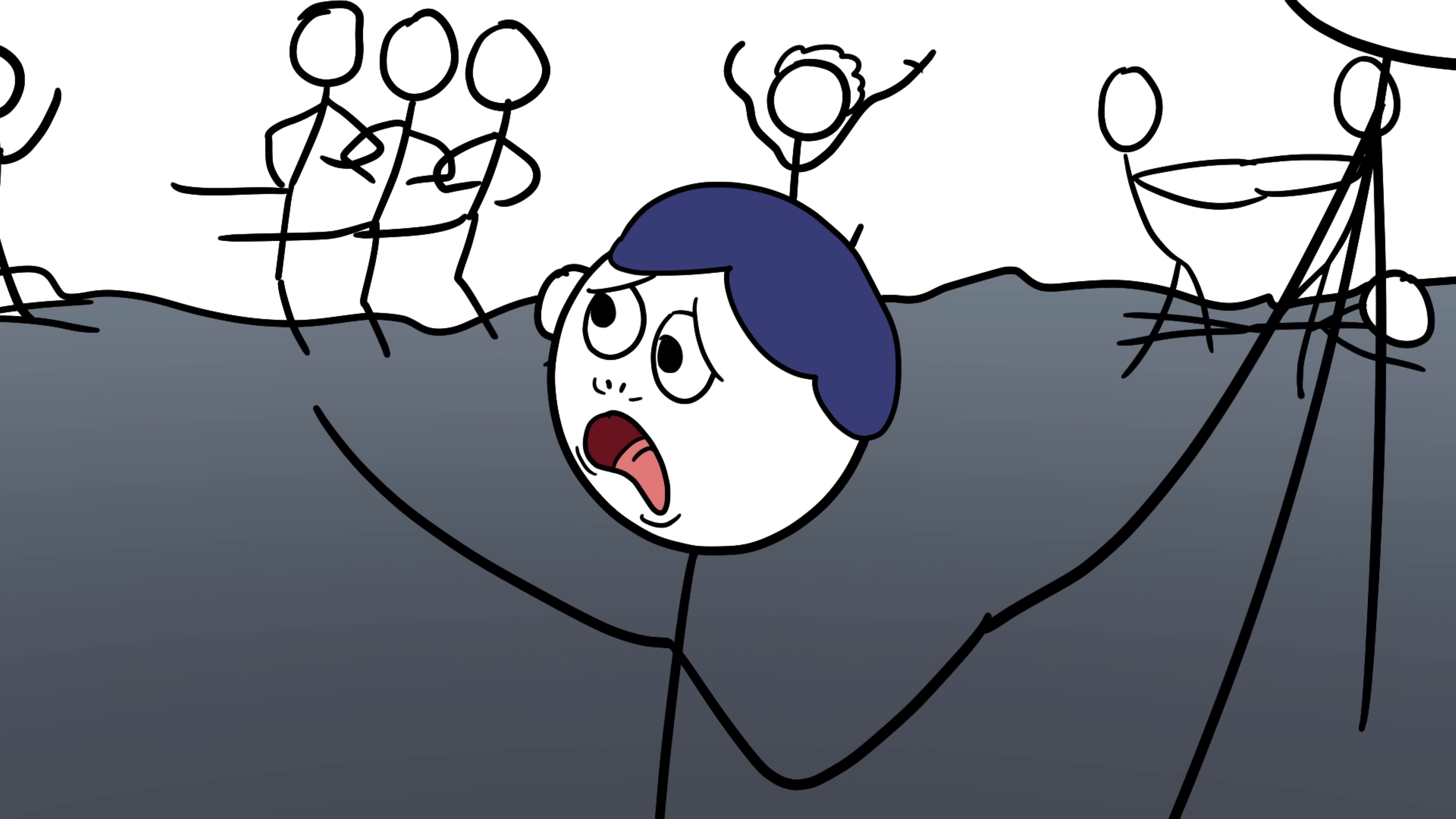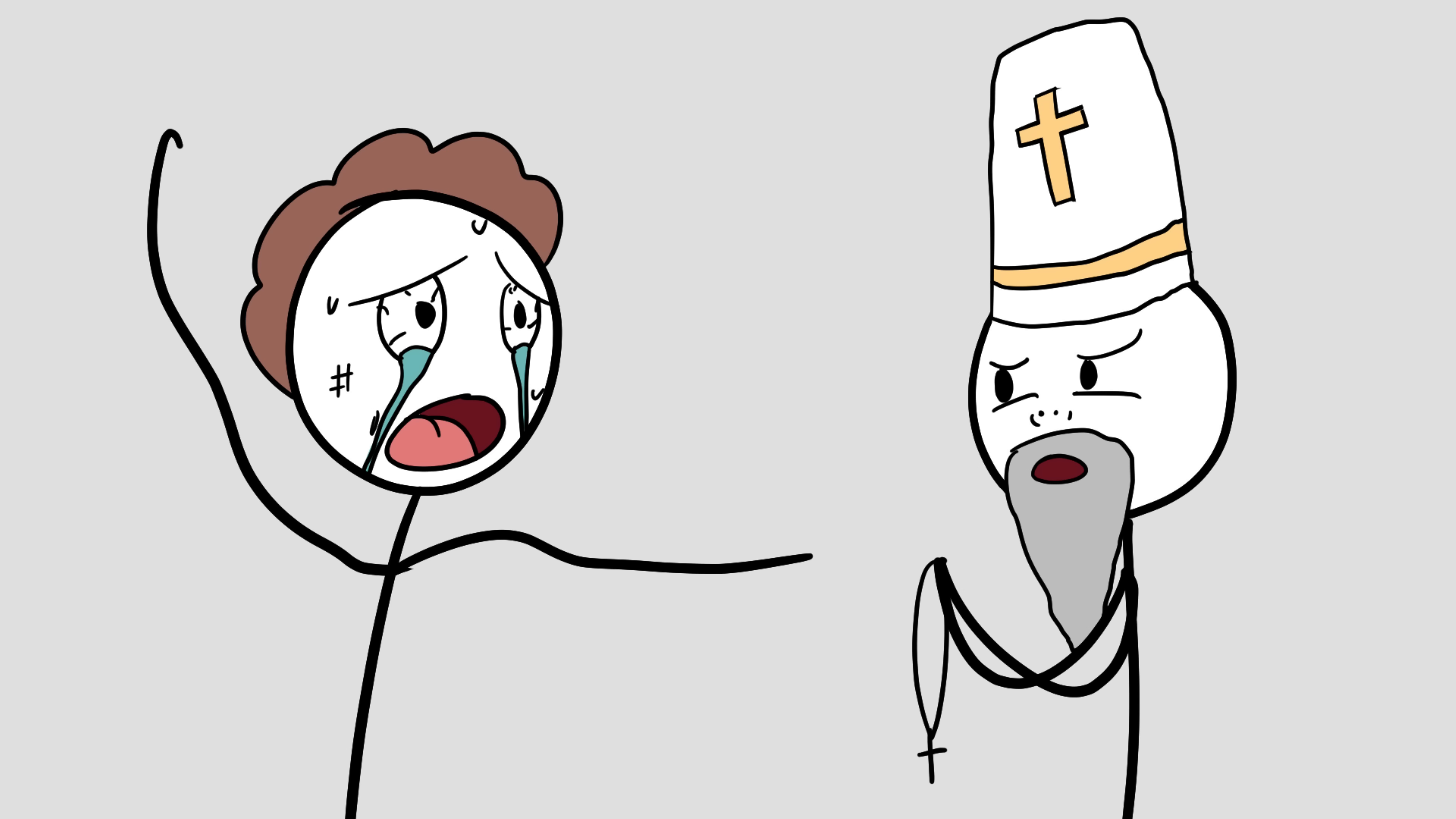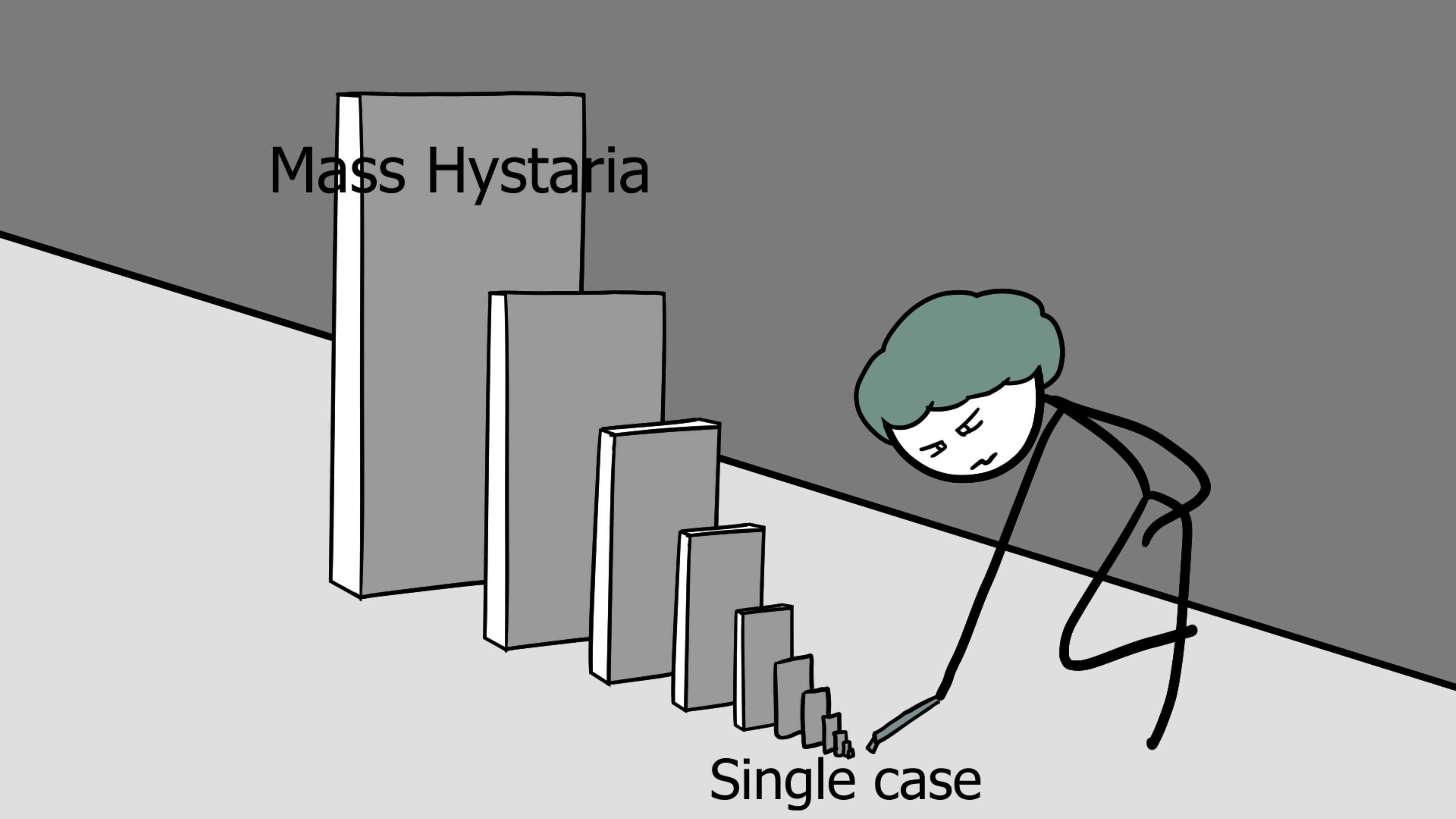The dancing plague wasn't just a medical oddity, it was a social disaster. Entire families were caught in it, communities were disrupted, and priests performed exorcisms in desperation. Whatever triggered it, it shows just how fragile the line is between collective psychology and physical reality. Strasbourg learned the hard way that when humans panic in unison, the results can be as deadly as any plague.